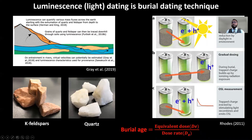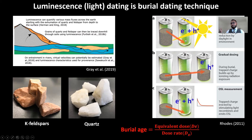The trapped charges such as electrons and holes, when they are exposed to sunlight, they get excited, they recombine, and emit photons or light. All the luminescent signals that were previously stored are now gone. We call this process bleaching or signal resetting.